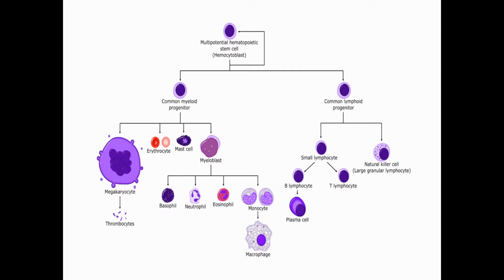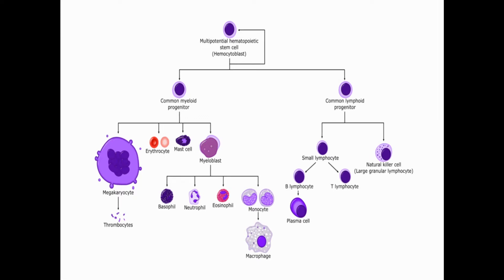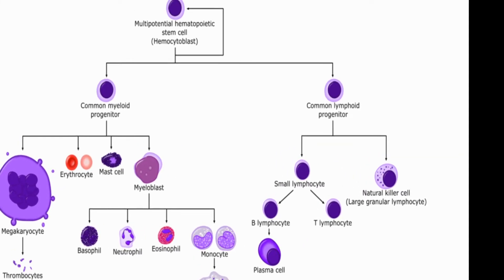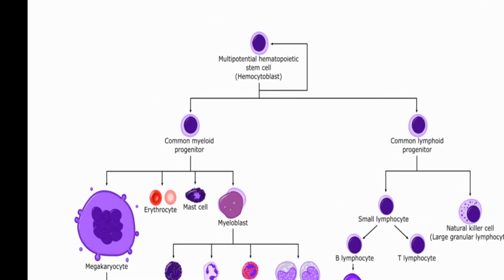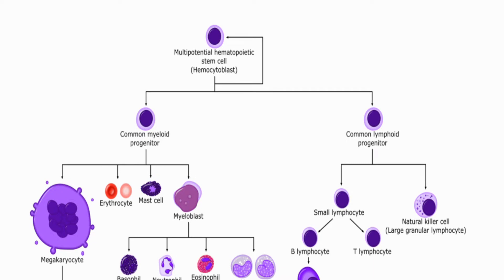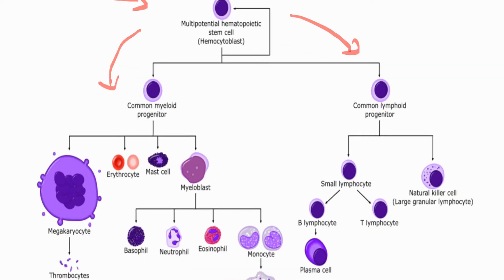Depending on which cells accumulate, we call it acute myeloid or acute lymphoid leukemia. In the bone marrow there are multipotent hematopoietic stem cells. They are called multipotent because they give rise to many different cells — myeloid cells and lymphoid cells.